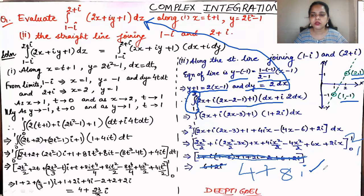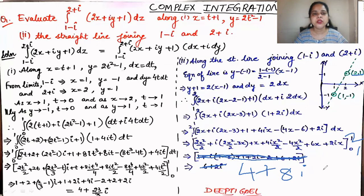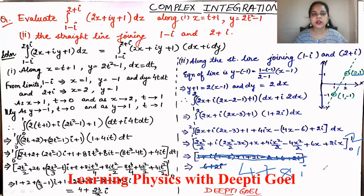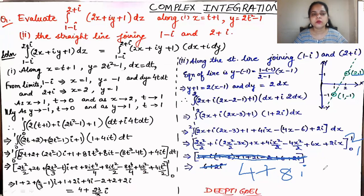By using this concept — substituting dz = dx + i·dy, replacing z with x + iy — we convert the integral into one variable. If it cannot be reduced to one variable, we separate it into two and substitute the limits of x and y accordingly, then solve.